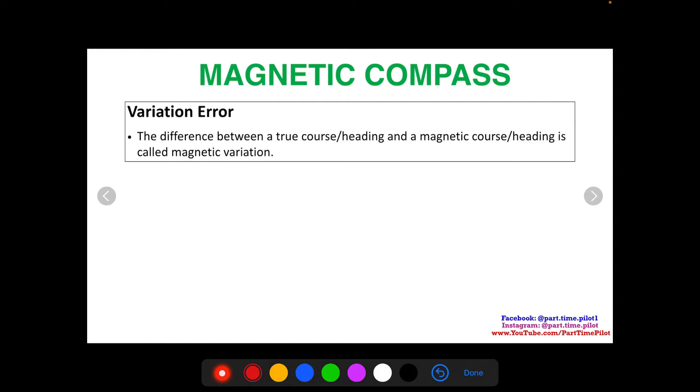Same thing for wind directions. You can have winds in terms of true, or you can have them in terms of magnetic. And that means they're either referencing a true north or a magnetic north.